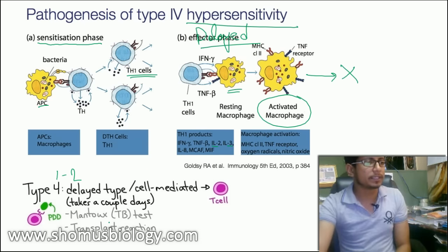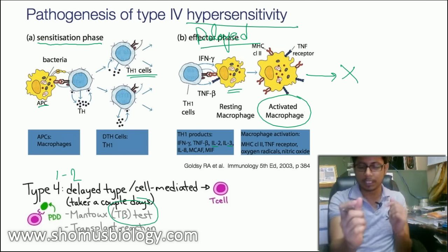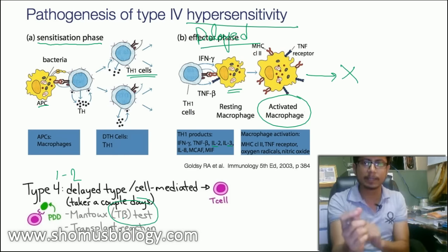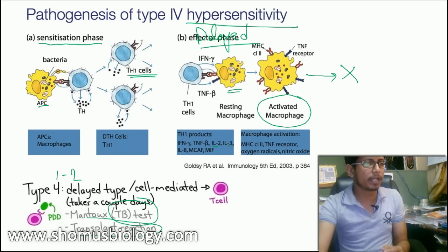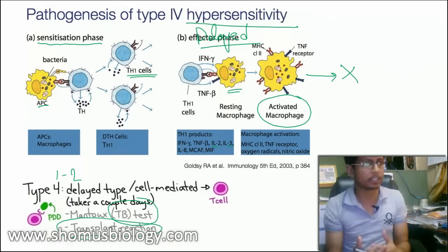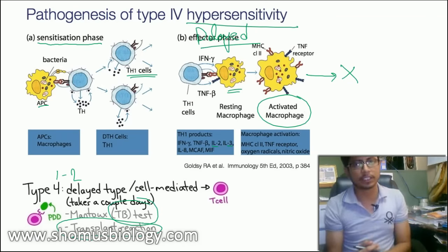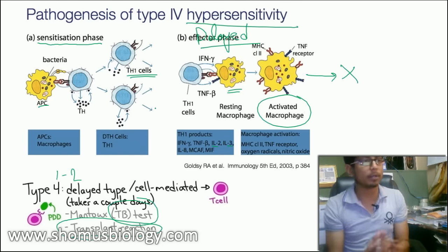An example of Type 4 hypersensitivity is the TB test — the entire test is based on this principle, providing the same antigen to check whether the body reacts again. Different transplant reactions also fall under Type 4 hypersensitivity — organ transplantation or tissue transplantation between individuals most often results in a Type 4 hypersensitivity response from the recipient's body.